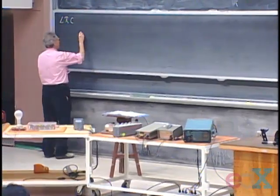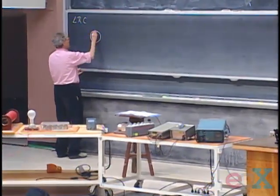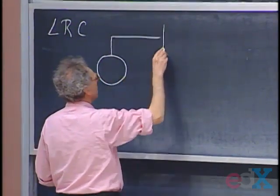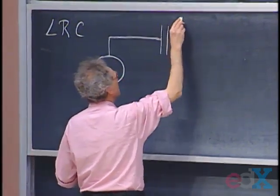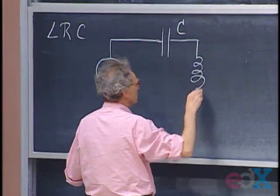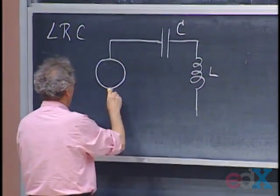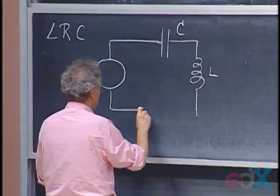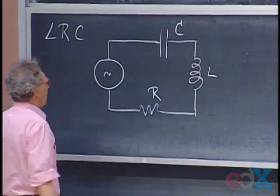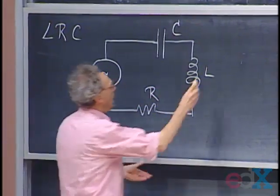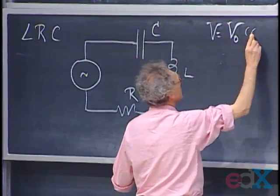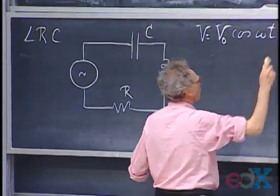I have here a driving power supply — alternating — and here I have a capacitor C, a self-inductor L, and the resistance R. This is AC, and let the driving voltage be V₀ cosine ωt.